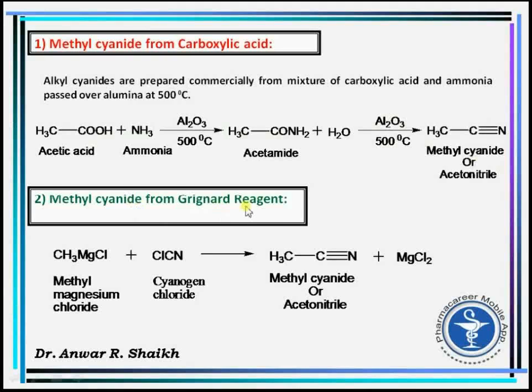Second method: by using the Grignard reagent. For example, Grignard reagent methyl magnesium chloride reacts with cyanogen chloride to form methyl cyanide.